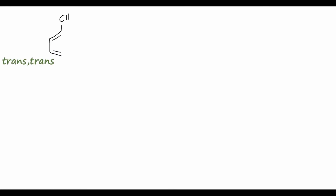Now what if we look at the reverse reaction? We can take a conjugated diene — the trans-trans variant of the substituted butadiene — expose it to light of a particular frequency, and end up with the cyclobutene ring product where both methyl groups are actually arranged cis. This is the opposite of what you might expect from simply reversing the previous reaction, so let's see why.